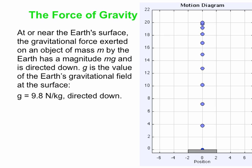g is what we call the value of the Earth's gravitational field at the surface. You might have called g the acceleration due to gravity — it has units of meters per second squared, so you might have heard g is 9.8 meters per second squared, directed down. This is equivalent to 9.8 newtons per kilogram. That means every kilogram of stuff near the surface of the Earth has 9.8 newtons of gravitational force acting on it. If you have 5 kilograms of stuff, you get 5 times 9.8 newtons of gravitational force applied by the Earth. In the free body diagram of a falling ball, the only force acting on it is gravity: mg, 9.8 newtons for every kilogram in that object.